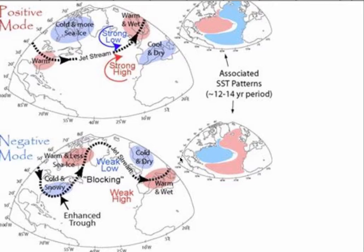There's always kind of a chicken and egg type of discussion here. Which came first? Does the sea surface temperature anomalies drive the North Atlantic Oscillation, or does the North Atlantic Oscillation drive the sea surface temperature anomalies? Or perhaps they do both. Perhaps what the sea surface temperature anomaly sets up is the ability for the North Atlantic Oscillation to feed back on itself — when it's in the positive phase to feed back on itself, you see this type of setup, and when it doesn't, you see this type of setup.